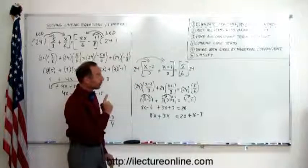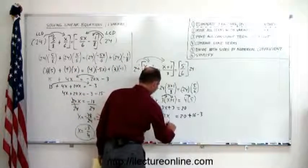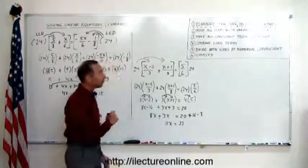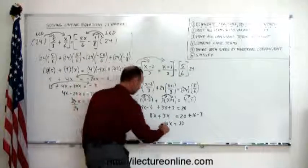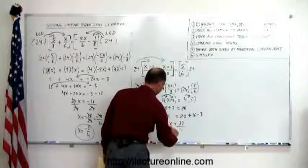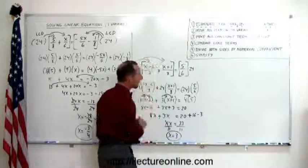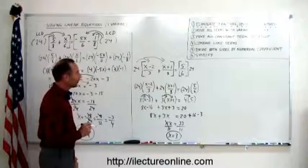Then it says step number 4, combine all like terms. 8 plus 3 is 11x. 20 plus 16 is 36, minus 3 is 33. And then divide both sides by the numerical coefficient. So divide the left side by 11, divide the right side by 11. This cancels out. We have x equals 33 by 11 is 3. And that's the answer of our problem.